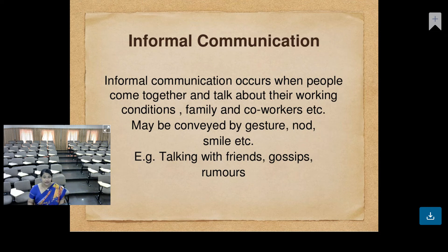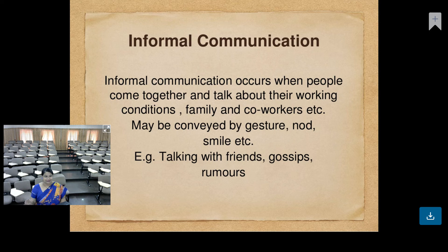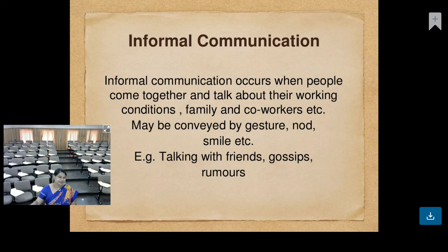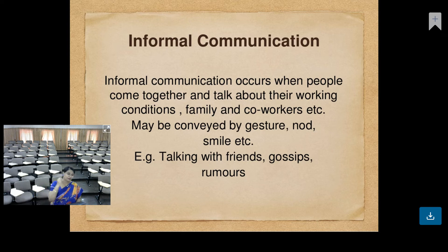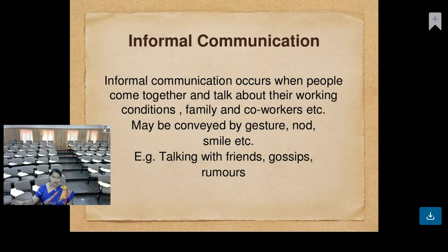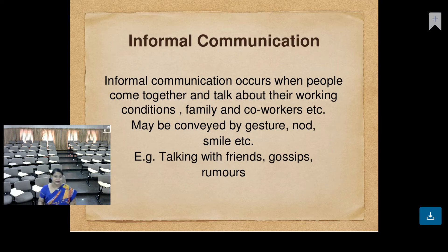Then what is informal communication? Informal communication occurs when people come together and talk about their working conditions. There is no meeting, no superior-boss meeting. All of them have gone to the canteen and start talking about their boss or the organization — maybe good or bad. With so much freedom they talk because nothing is getting recorded and no one is observing their behavior. They talk about their boss, their family, their co-workers. That is called informal communication.